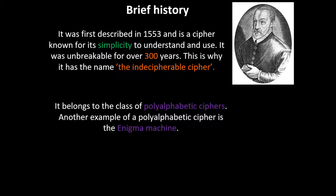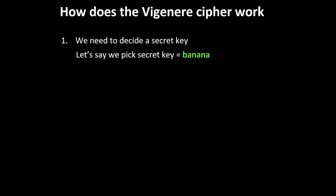Another example of a polyalphabetic cipher is the Enigma machine. A polyalphabetic cipher is unlike a monoalphabetic cipher — for example, a Caesar cipher — where one letter is mapped to one specific letter. For example, with a shift of three in the Caesar cipher, A is always mapped to D. In a polyalphabetic cipher, one letter could be mapped to many different letters, so A could be mapped to D, F, G, etc.